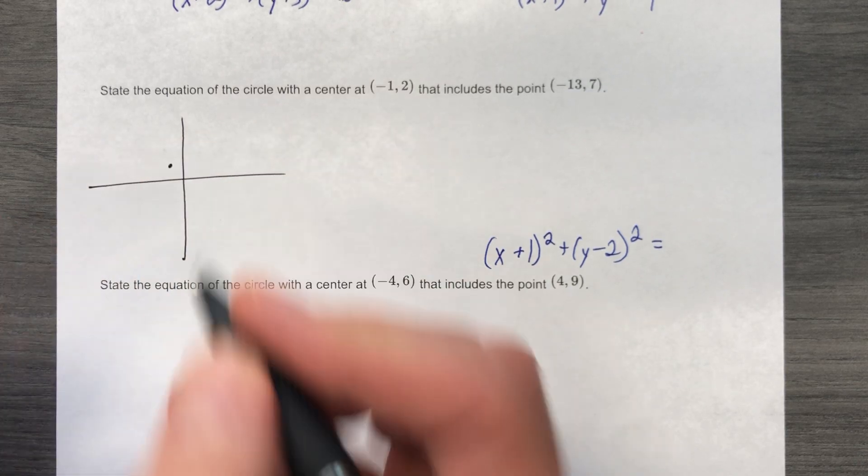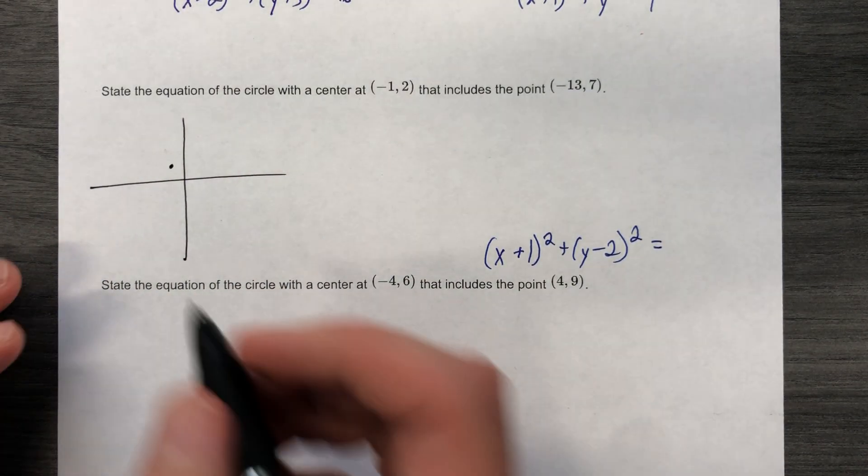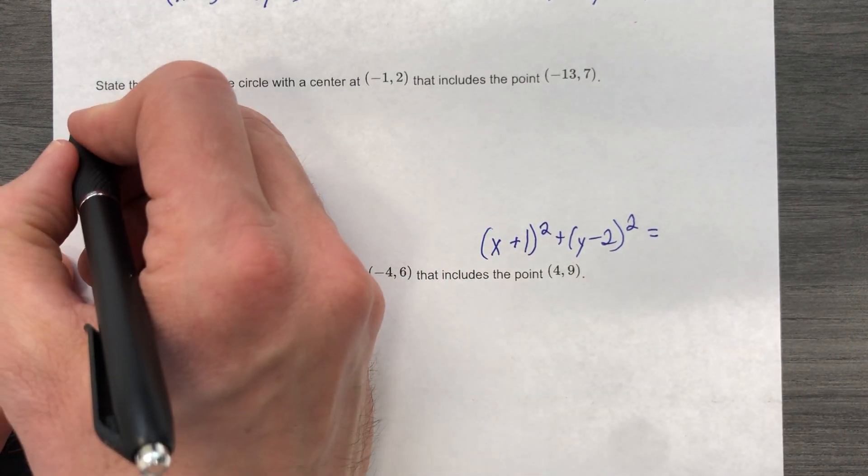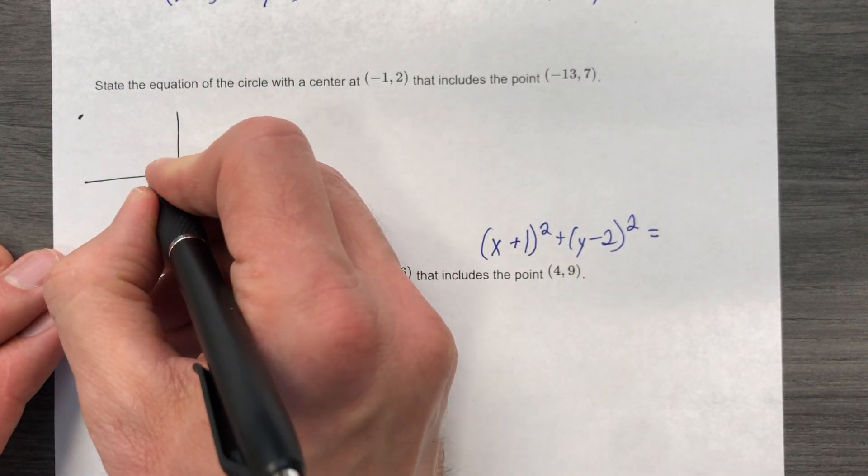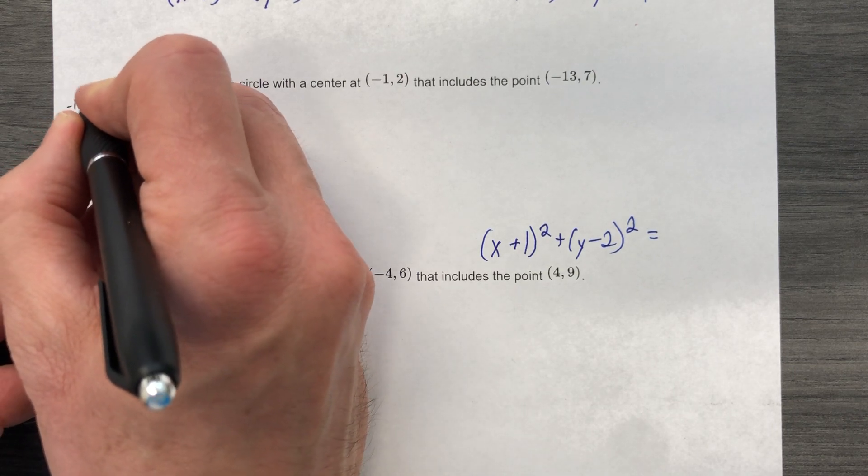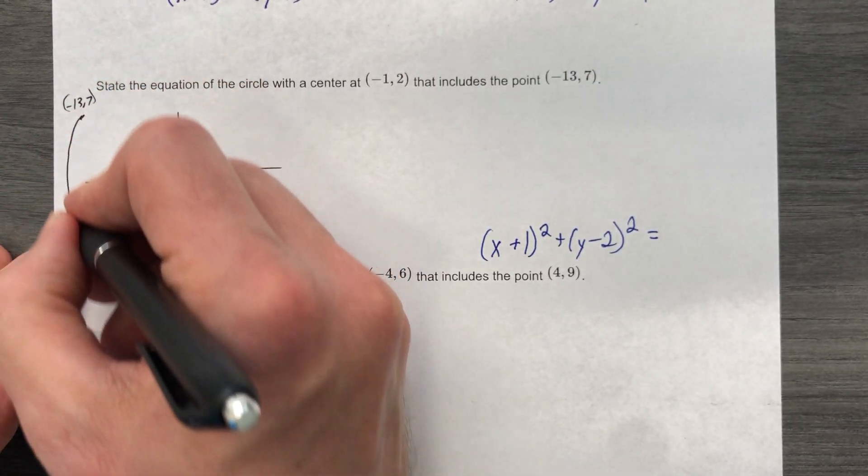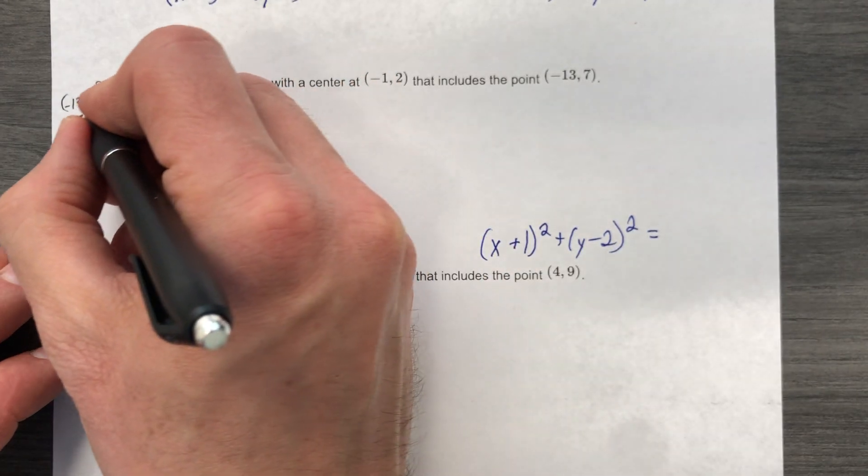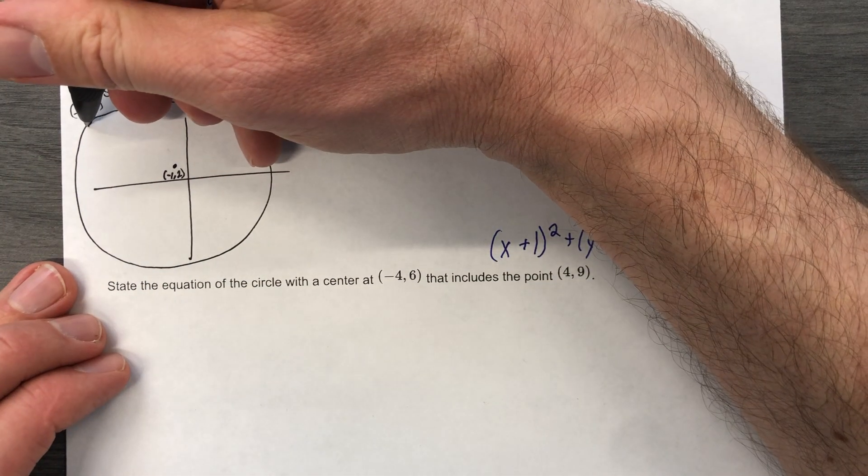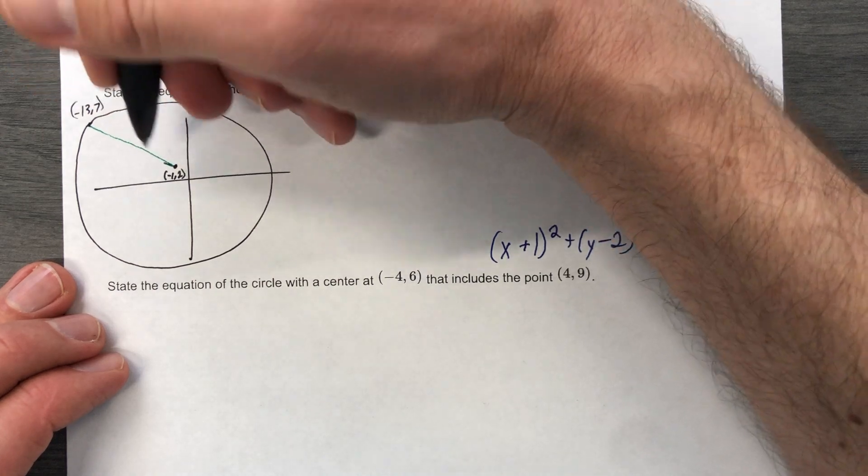Negative one, two is here. Is it exact? Nah, mark it if you want to, I don't feel like it. The point negative 13, seven is here. So negative one, two is here. Negative 13, seven is here. Draw your circle if you want to. Or not, that's up to you.